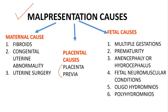The fetal causes include multiple gestations. It can also occur in twin pregnancy, and in twin pregnancy usually the second fetus is in transverse lie. Other causes are prematurity, anencephaly, hydrocephalus, fetal neuromuscular conditions, oligohydramnios, and polyhydramnios.